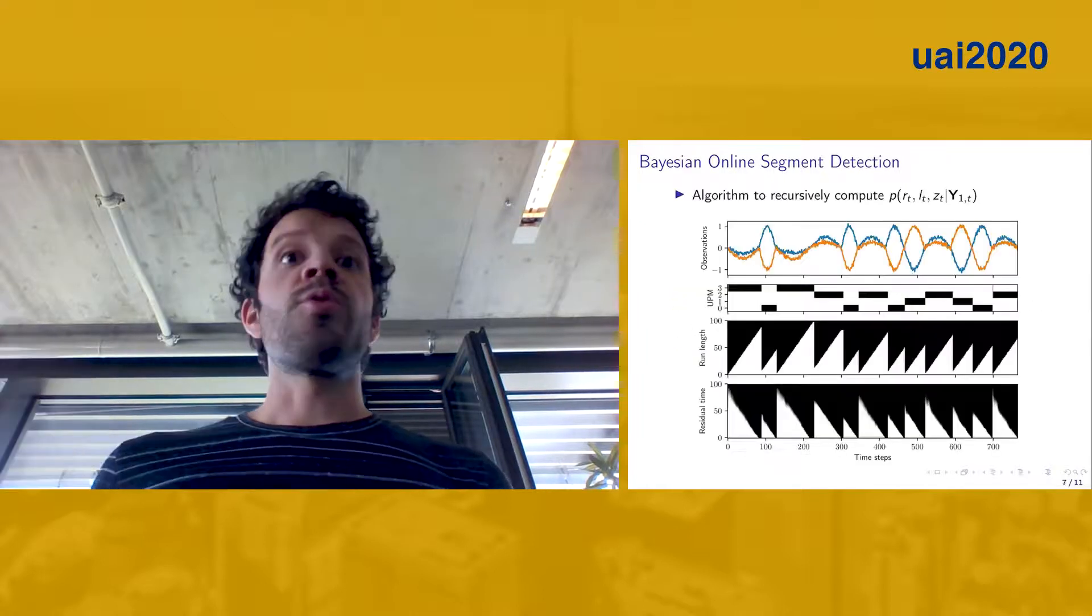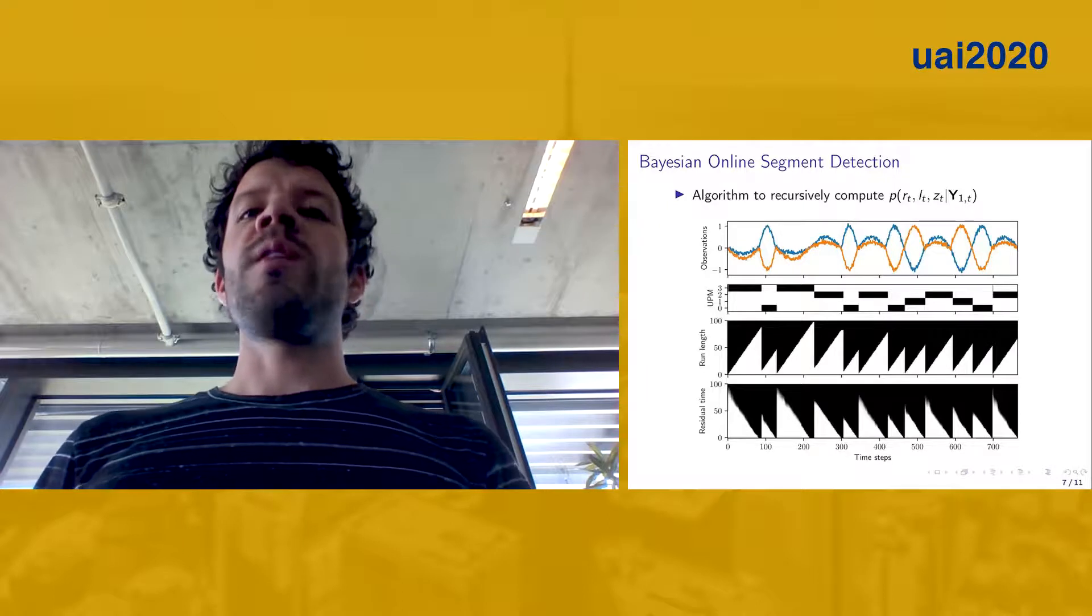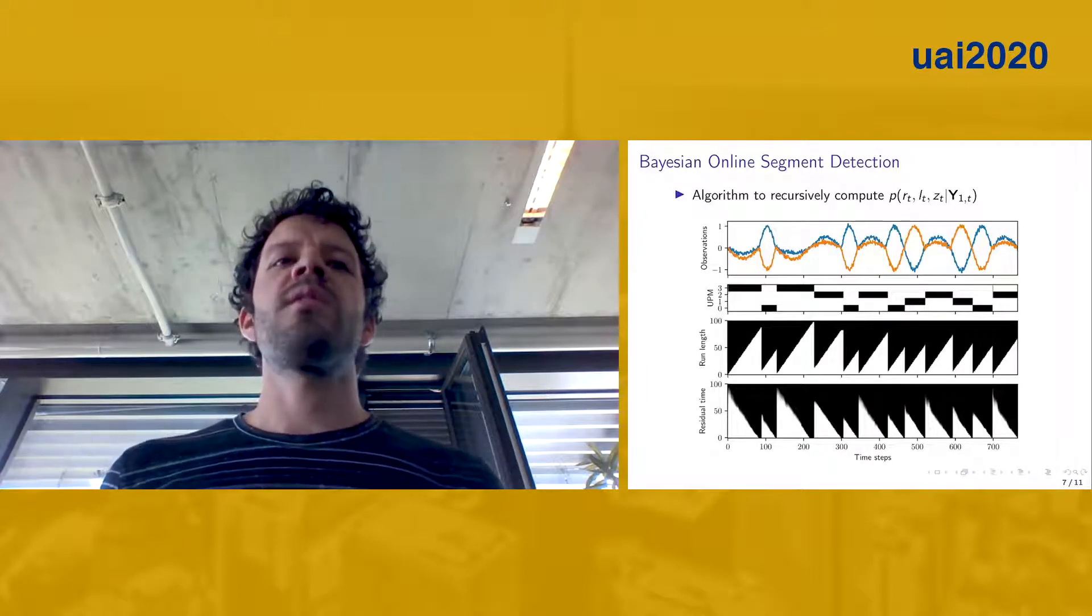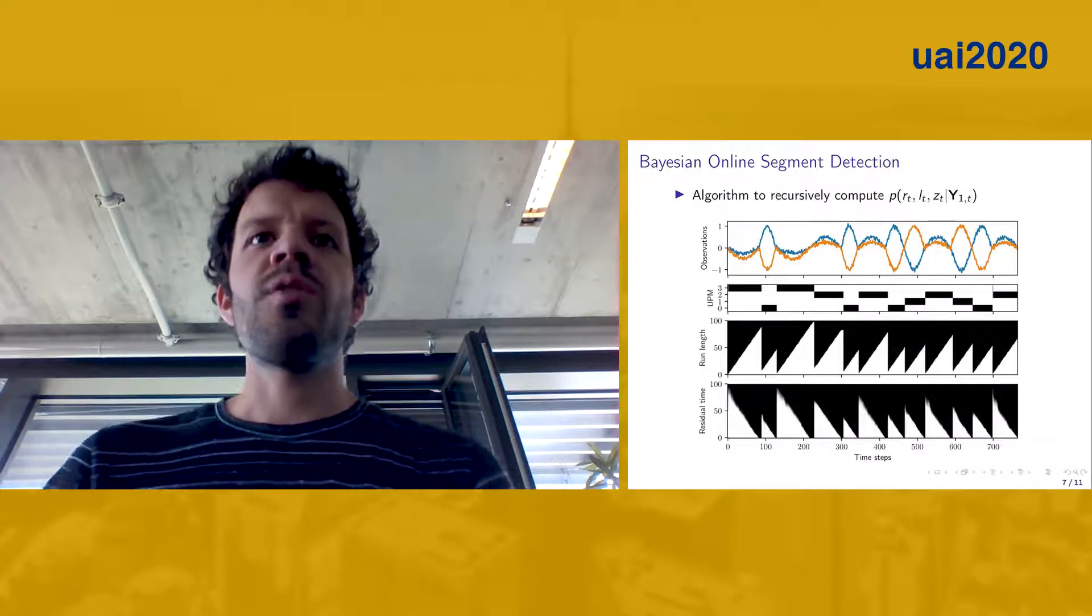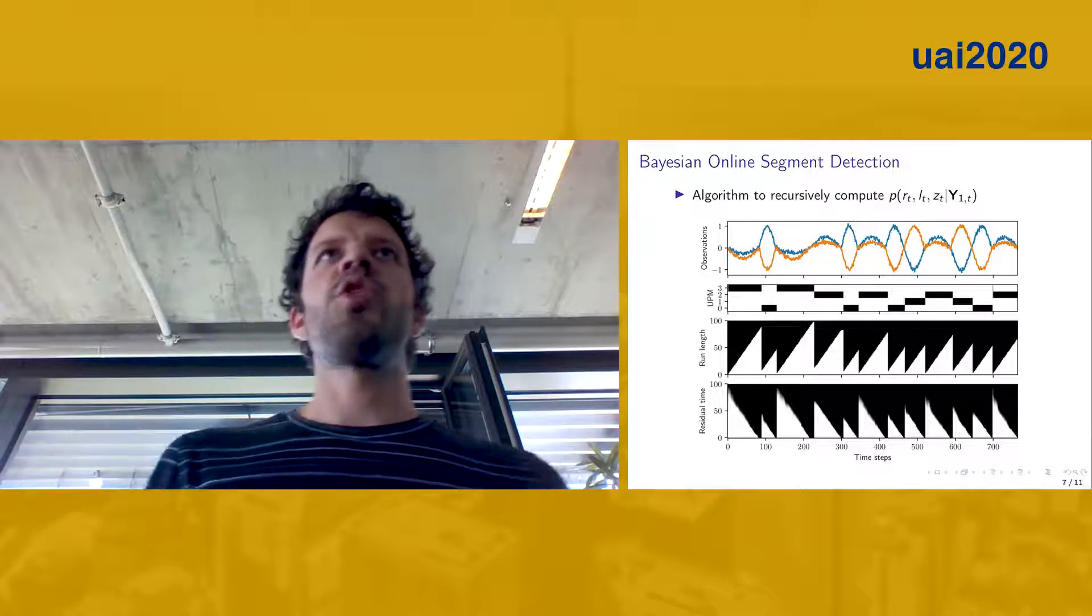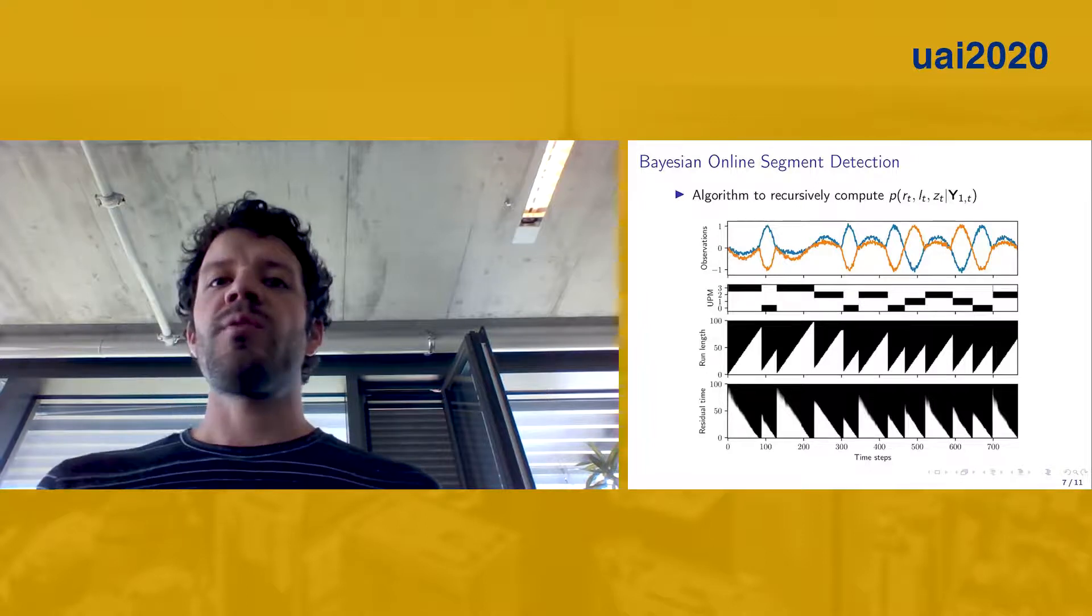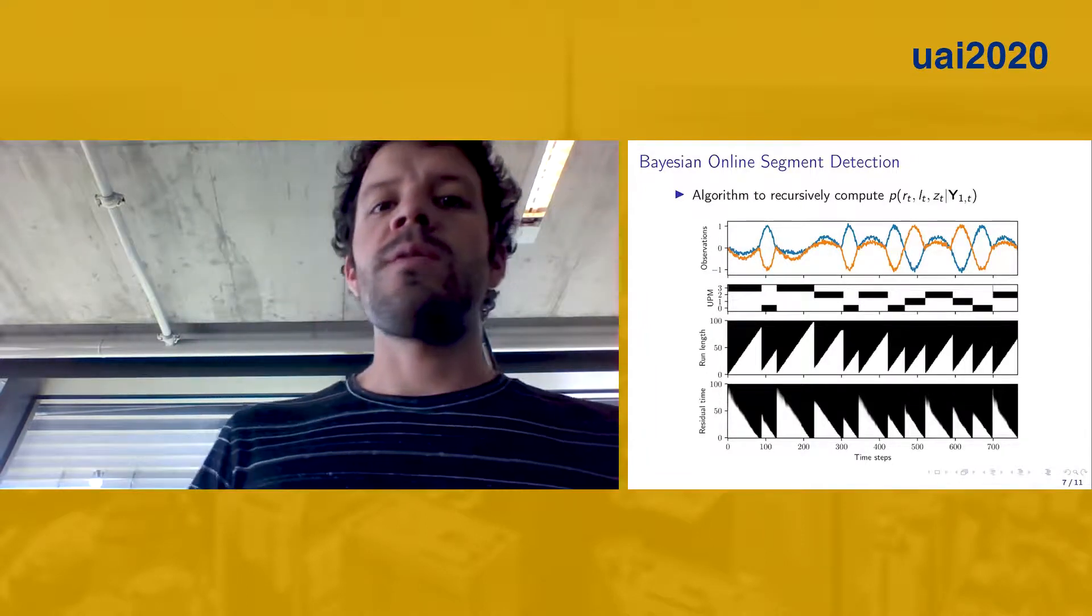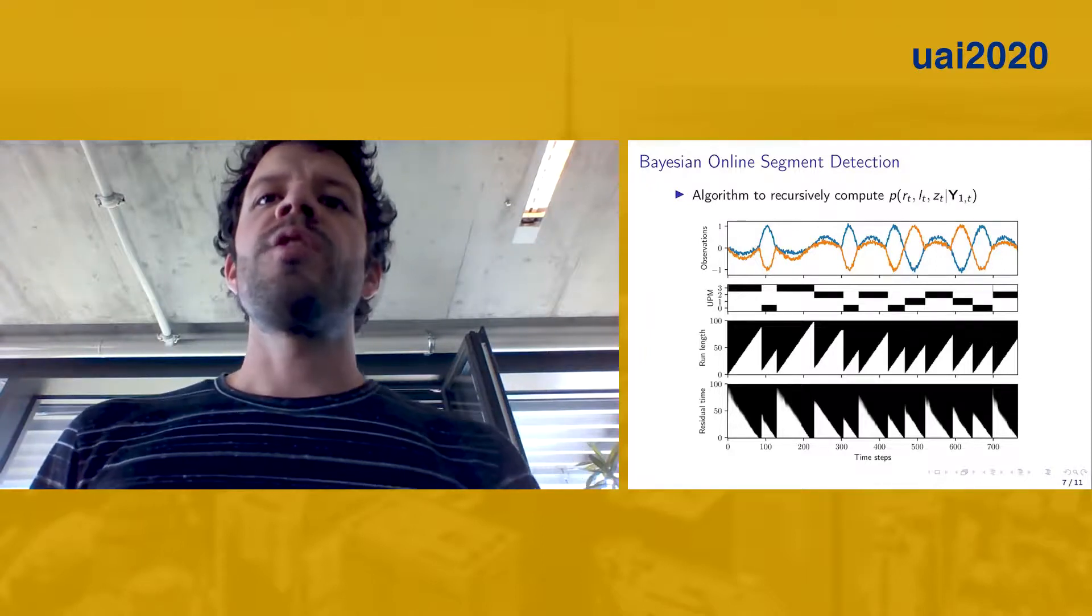Well, it turns out that it's possible to perform a joint inference over all these hidden quantities. We use the term Bayesian line segment notation deliberately to refer to the fact that we are jointly inferring the segment starting position and the ending position of the segment as well. So in this figure, we also show the kind of inference that can be drawn from this new posterior.